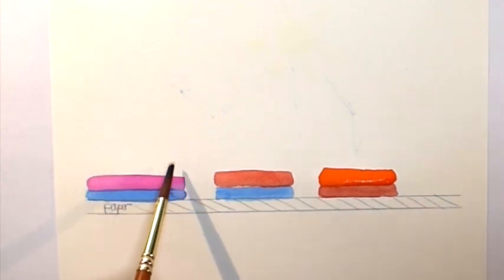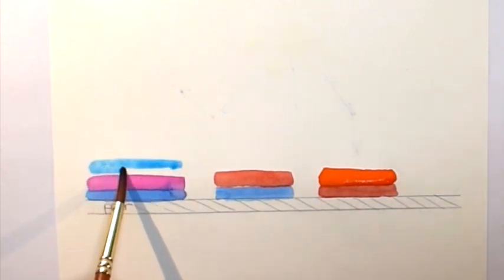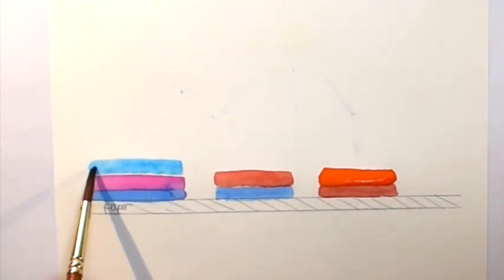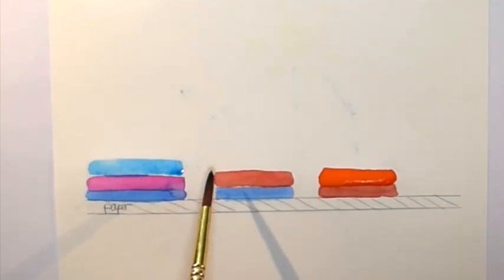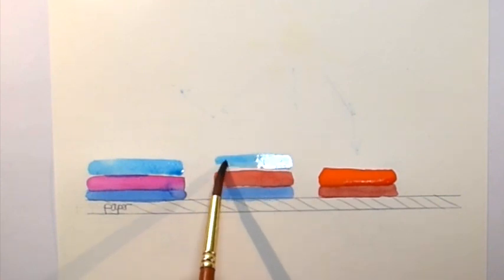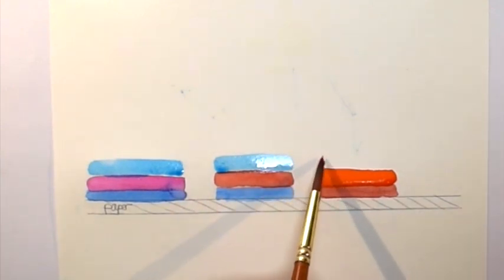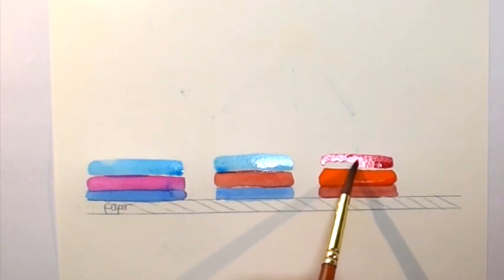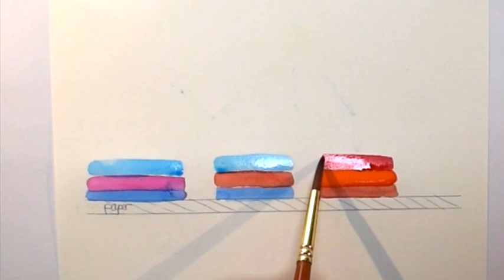Now let's add a third layer of paint. In this case a thalo blue. And here we'll add thalo blue as well, so a transparent color. And in the third one we'll add a third layer of opaque. This time cadmium red deep.